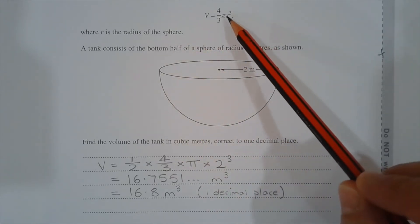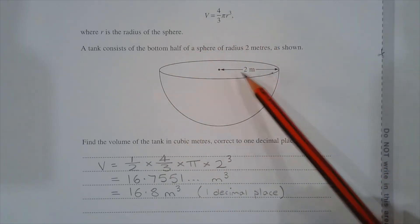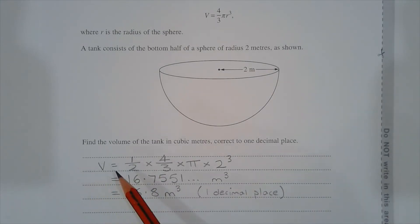And in this case, r, which represents the radius of the hemisphere, is 2. So the volume is equal to half multiplied by 4 over 3 multiplied by pi multiplied by 2 cubed.